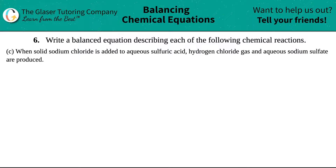Number six. Write a balanced equation describing each of the following chemical equations, and then we have letter C. In this example they say, when solid sodium chloride is added to aqueous sulfuric acid, hydrogen chloride gas and aqueous sodium sulfate are produced.